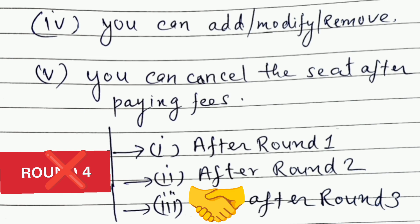Once you have paid the fees, you can do a seat cancellation. After Round 1, you can cancel the seat you are paying fees for today. You can also cancel after Round 2. You will be given 5–6 days to cancel the seat. Good news is that you can cancel the seat after Round 3 as well. However, you cannot cancel the seat after Round 4 — if you do, you will not get any refund. So reject and upgrade students can cancel the seat up to Round 1, Round 2, and Round 3.